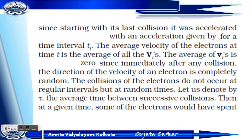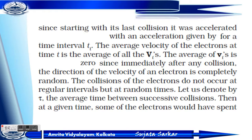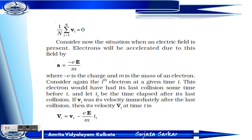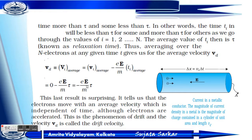Now, this ti is the time interval. The collisions of the electron do not occur at regular intervals but at random times. This time will be denoted as tau. Tau is the average time between successive collisions — the relaxation time. Electrons may spend more time than tau or less than tau between collisions. The average of ti for i from 1 to n is tau, which is the relaxation time.